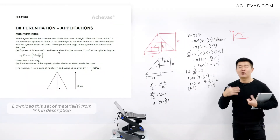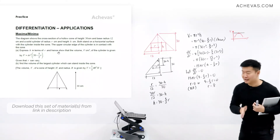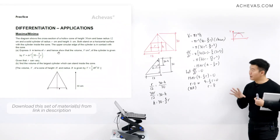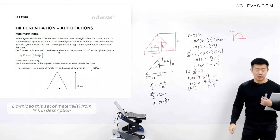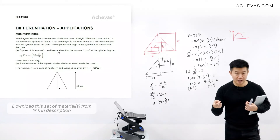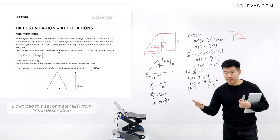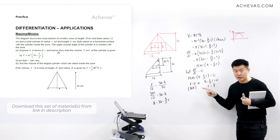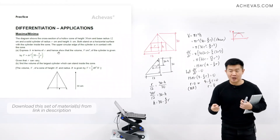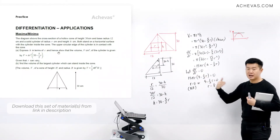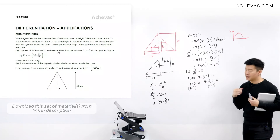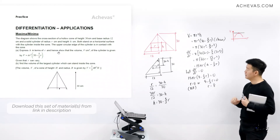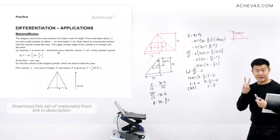However, we cannot yet conclude that r = 8 gives the largest volume, because a stationary point can be a maximum, minimum, or stationary point of inflection. It is important to justify in our solution whether this stationary point is a maximum. We can use either the first derivative test or the second derivative test.